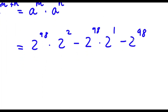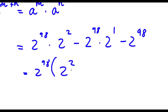Now you can see that all three terms have 2 to the power of 98 in them. So if I factor out 2 to the power of 98, I get 2 to the power of 2 from the first term, negative 2 to the power of 1 from the second term, and negative 1 from the third term.